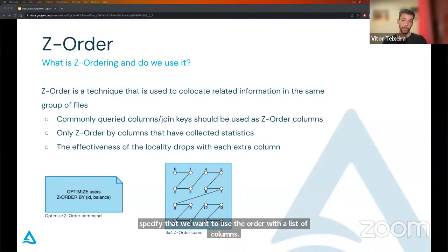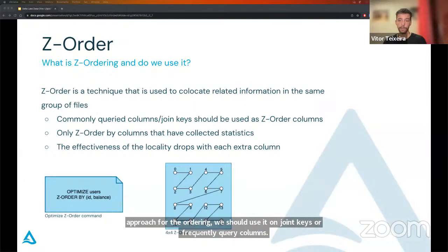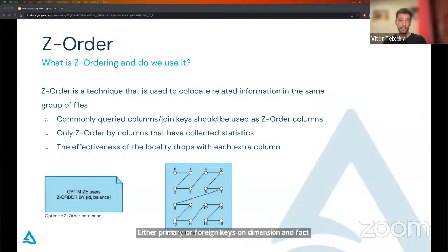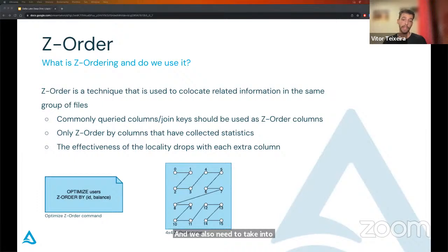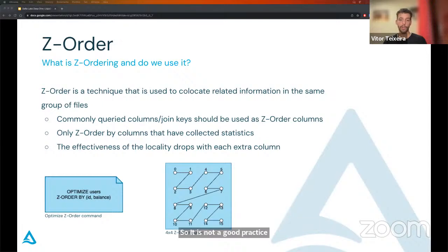To use z-order, we need to run an optimize command and specify that we want to use z-order with a list of columns. Regarding the general approach, we should use it on join keys or frequently queried columns — either primary or foreign keys on dimension and fact tables, ID fields, or high-cardinality fields frequently used in our queries. These columns should be part of the ones that have their statistics collected, otherwise it won't work. We also need to take into account that the overall effectiveness of the algorithm drops as more columns are added, so it is not a good practice to z-order by a lot of columns.